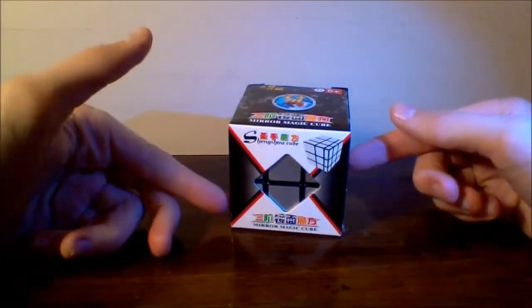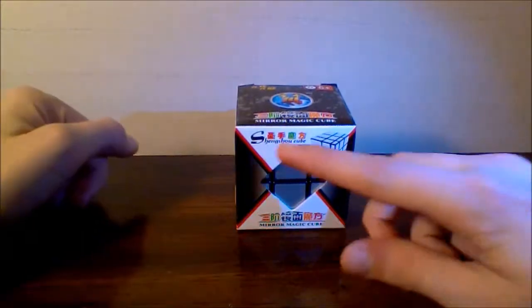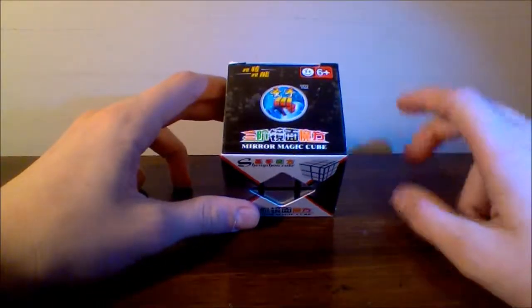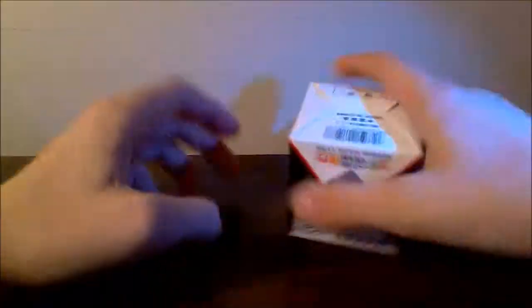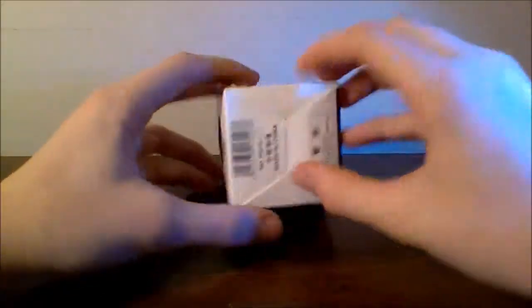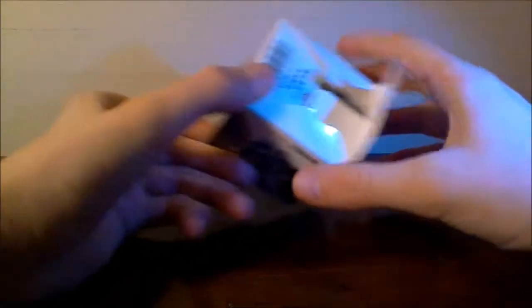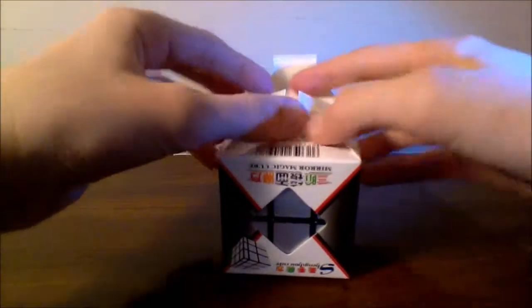For those of you who can't already tell based on the box, I've gotten the Xingqiao Mirror Magic Cube or the Mirror Cube. Let's go ahead and open up this box. And one of the ways you can open up your Rubik's Cube boxes without breaking them is to open it up from the bottom here. Just grab that little tab and pull. And here's the cube.